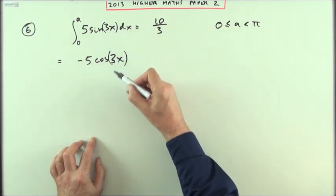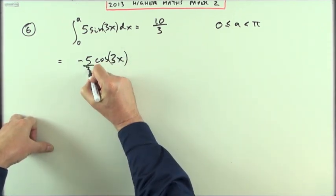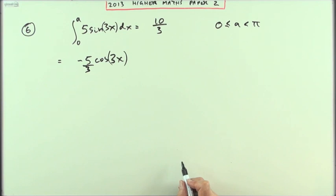Since the derivative of 3x is 3, I'll have to divide by 3. I'll just pop that over here, so I've got negative 5 upon 3 cos 3x.